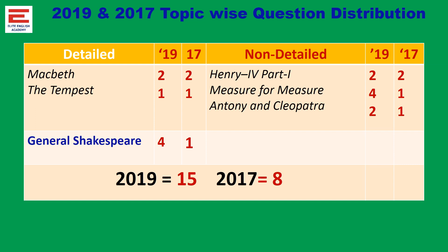Regarding non-detail, in 2019 totally 8 questions are asked; in 2017, 4 questions are asked. From this, what do we understand? There is no difference between detail and non-detail. In detail, fewer questions are there, whereas in non-detail there are more questions. General Shakespeare, though it does not consist of any syllabus — just General Shakespeare is given — you have to cover Shakespeare's life, his gradual development through four stages, and his sonnets. All this information is asked in the exam, so it is very important to go through that text at least once. The texts are available on the internet.